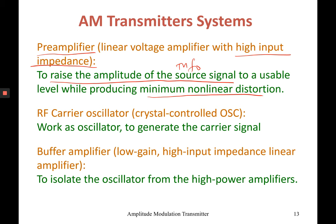Next is the RF carrier oscillator, which acts as a carrier signal generator and produces the carrier signal for the system. After that is the buffer amplifier — a low-gain, high input impedance linear amplifier used to isolate the oscillator from the high power amplifiers.